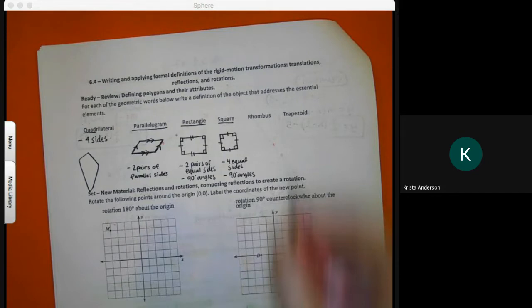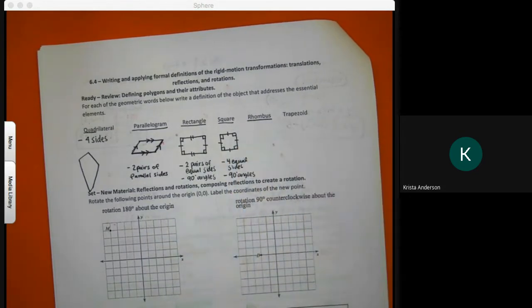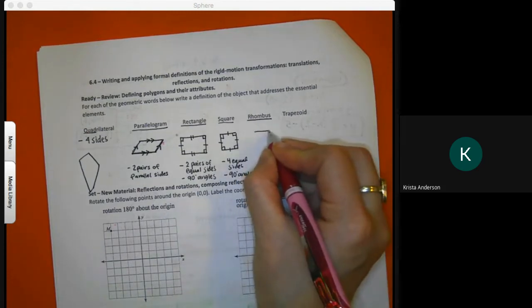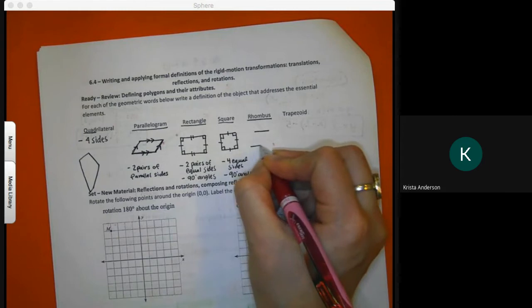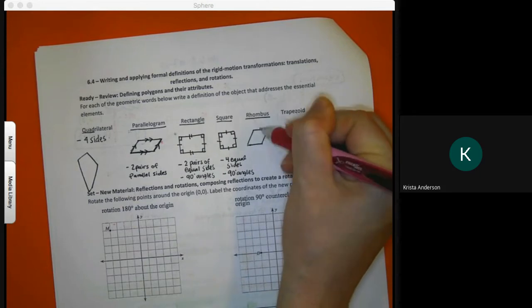Now with a rhombus, a rhombus is kind of like a parallelogram. The only difference is when you shift it, you need to make sure all sides are equal. It's kind of like a square that's been shifted.